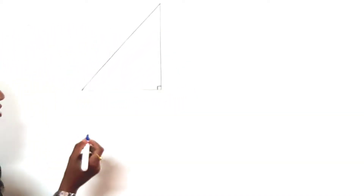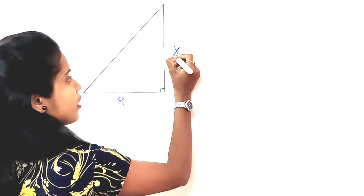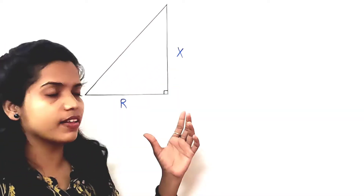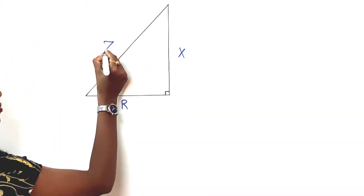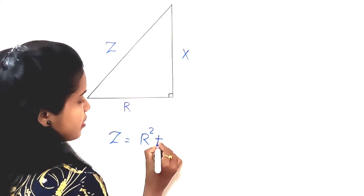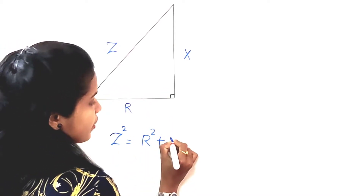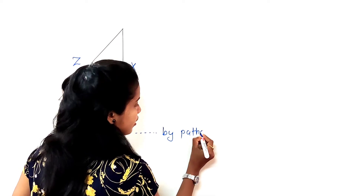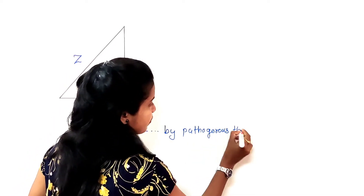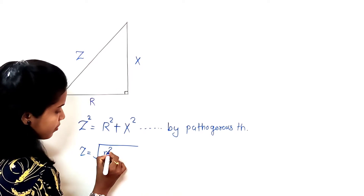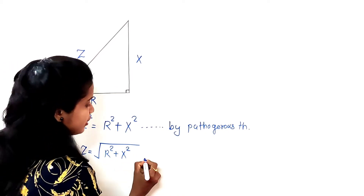The base of the impedance triangle represents resistance, because resistance has a phase shift of 0 degrees. Reactance, which is at 90 degrees, represents the height of the triangle, and the hypotenuse is Z (impedance). By the Pythagorean theorem, Z = √(R² + X²). The unit of impedance is ohm.